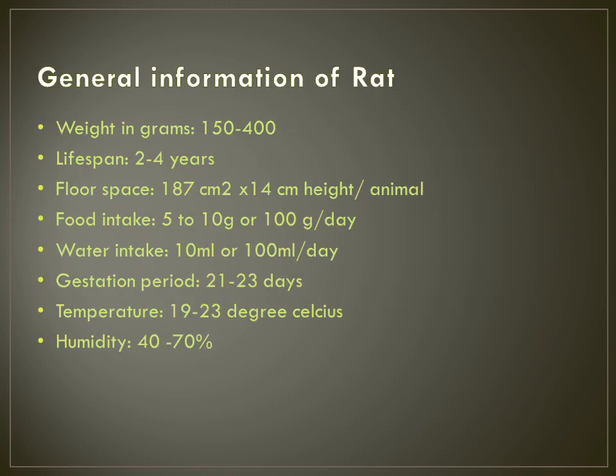General information on rats: They generally weigh between 150 and 400 grams and live for 2 to 4 years. They require around 187 × 14 centimeter floor space. Food intake is 100 grams per day. Gestation period is 21 to 23 days. Temperature is to be maintained between 19 to 23 degrees Celsius, and humidity required is 40 to 70 percent.